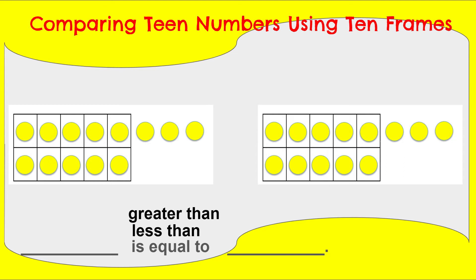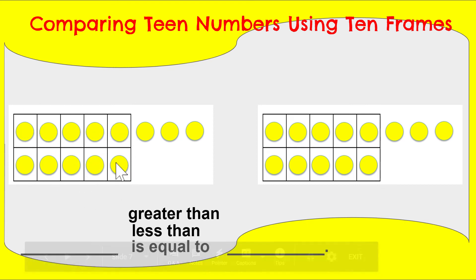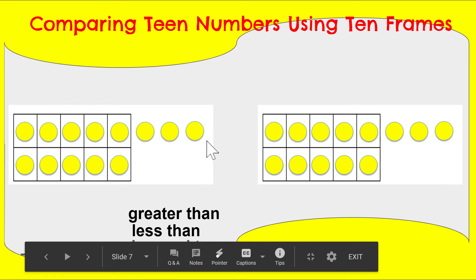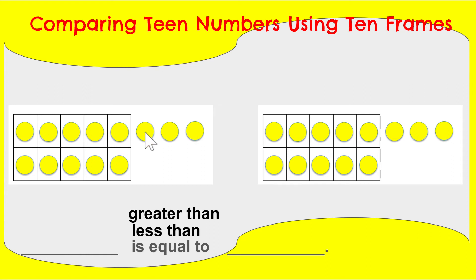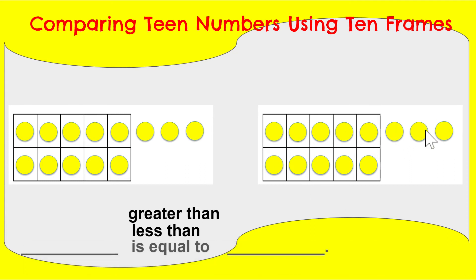Here's another practice for us using our 10 frames. Over here, I have one 10 frame all filled, so I know automatically there are 10 there. And then how many extra do we see? I see three extra — one, two, three. So 10 and three more — how many does that make? 13. If you need to count on: 10, 11, 12, 13. And how about over here? I have one 10 frame all filled also, and over here I have another three extra. 10 and three extra is 13.